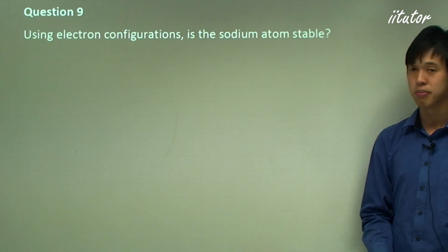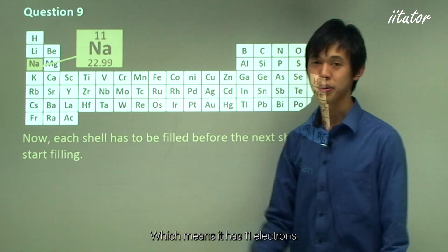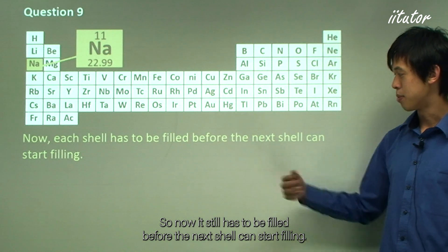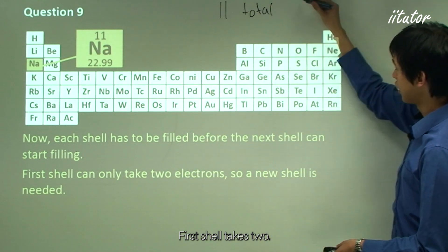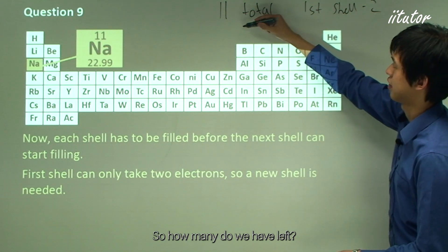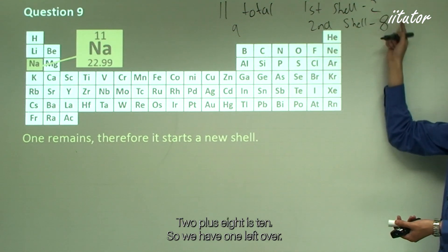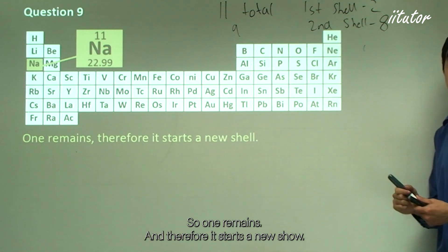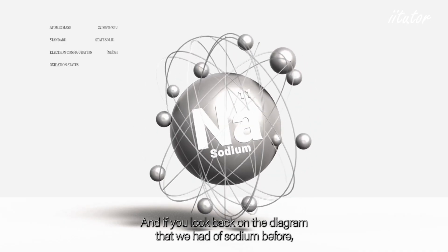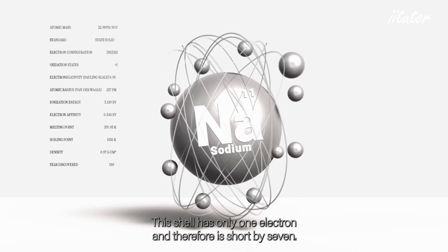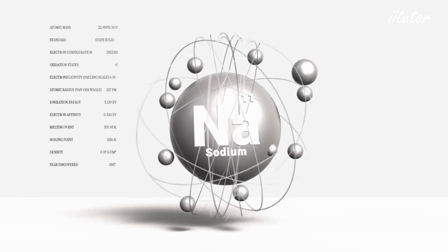Using electron configurations, is the sodium atom stable? Sodium has an atomic number of 11, so it has 11 electrons. The first shell takes 2, leaving 9. The second shell takes 8, leaving 1. That remaining electron starts a third shell with only 1 electron, which is short by 7. Therefore, the sodium atom is unstable because its outermost shell doesn't have 8 electrons.